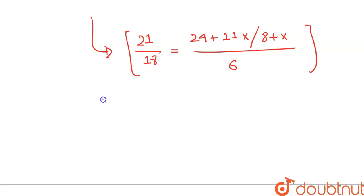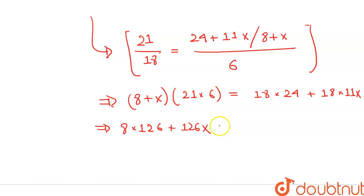So we will simplify this. We will get 8 plus X times 21 times 6 is equals to 18 times 24 plus 18 times 11X. This will give us 8 times 126 plus 126 times X is equals to 432 plus 198X.